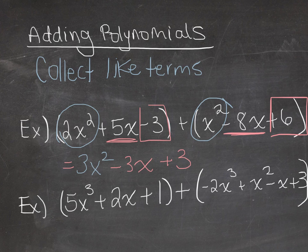Now if I look at the next example, same idea. I just want to collect my like terms. So I have a 5x cubed and I have a negative 2x cubed. So those are like terms. They go together. So then I have 3x cubed. 5 minus 2 is 3.